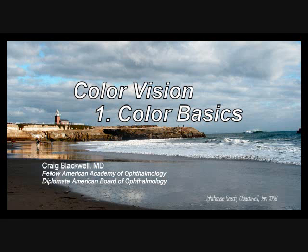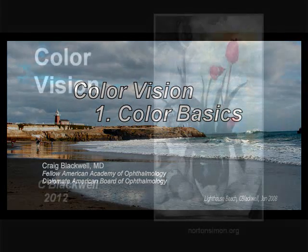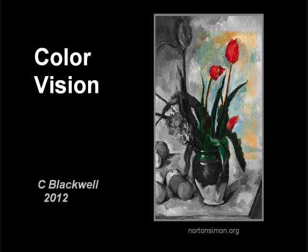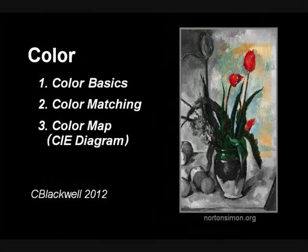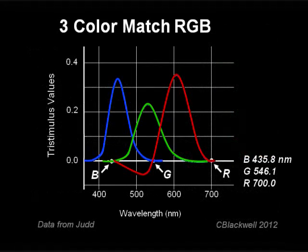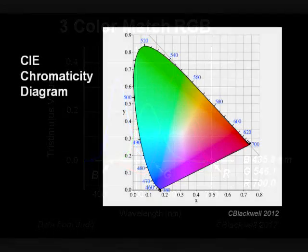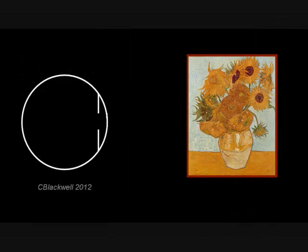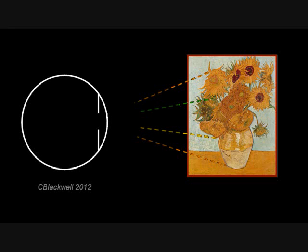This video is the first of a series about color vision. In this one we are going to discuss basic concepts about color. In this series we are going to take you on a tour through color vision in three steps. In the first three videos we will cover basic concepts about color and color science. This graph about color matching will be of key importance, leading to the creation of the chromaticity diagram. In later videos we will cover reception of color by the retina and perception of color by the brain.